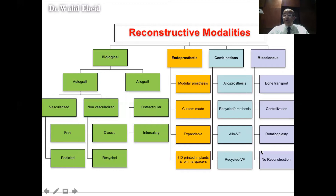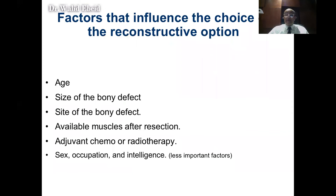In some cases we do not do reconstruction, like when we resect the proximal fibula or parts of the pelvis. How we choose among these options depends on several factors: age (treatment differs for children vs. adults), size and site of the bony defect, available muscles after resection, the need for adjuvant chemo and radiotherapy, the sex and occupation of the patient, and the patient's ability to use sophisticated reconstructive options.